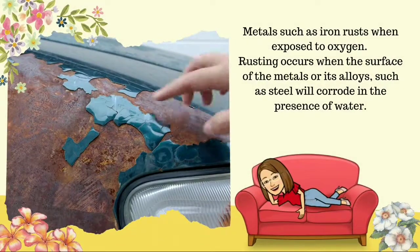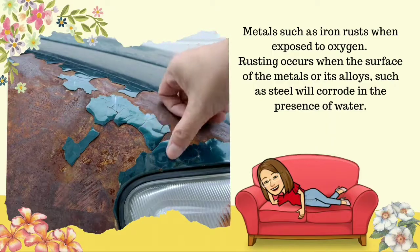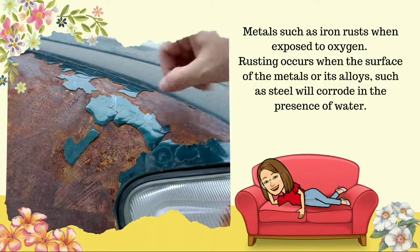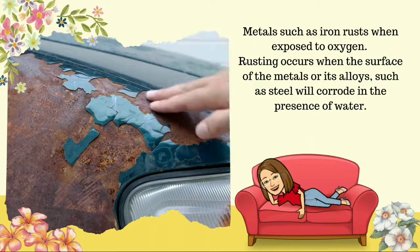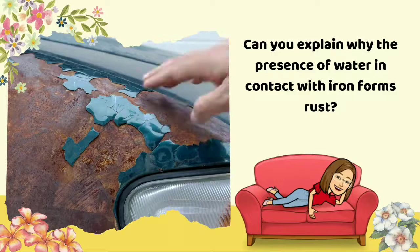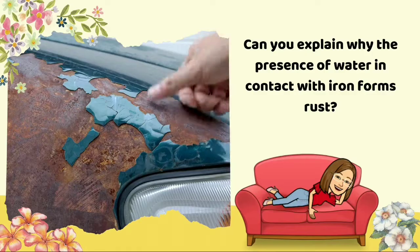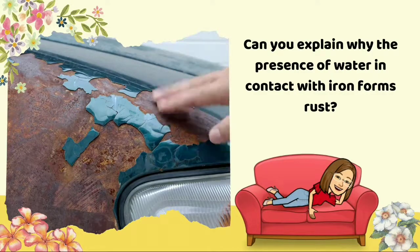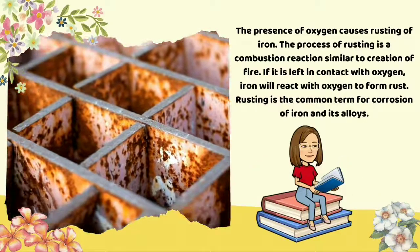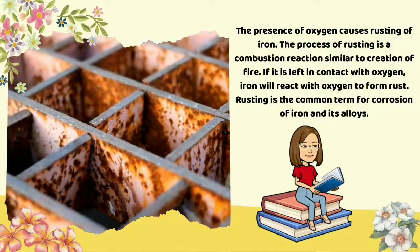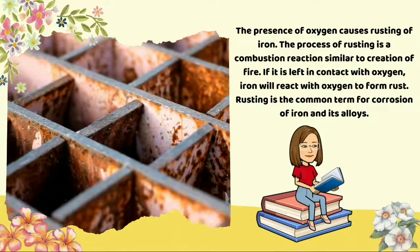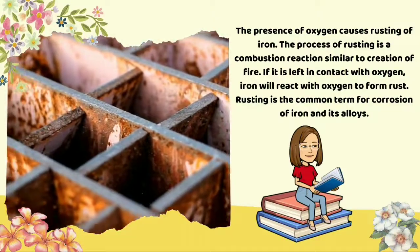Metals such as iron rust when exposed to oxygen. Rusting occurs when the surface of metals or their alloys, such as steel, corrode in the presence of water. Water is a compound made up of oxygen and hydrogen, and the presence of oxygen causes rusting of iron. The process of rusting is a combustion reaction similar to the creation of fire. If iron is left in contact with oxygen, it will react to form rust. Rusting is the common term for corrosion of iron and its alloys.